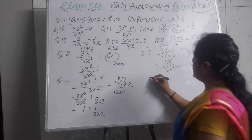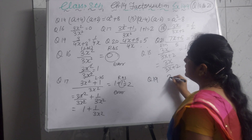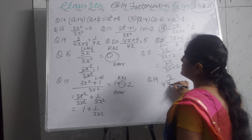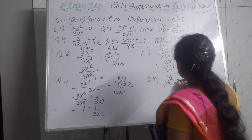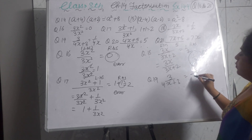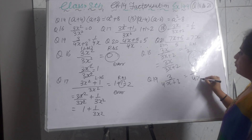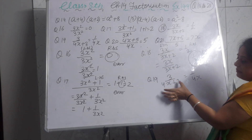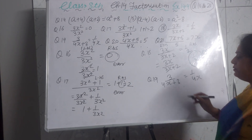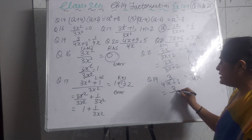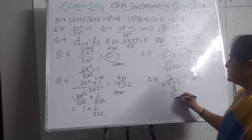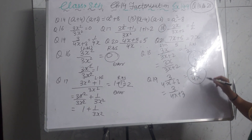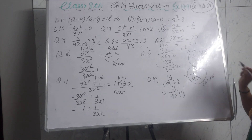Question 19: 3 ÷ (4x + 3) = 1/(4x). This is the same error type as question 18: single term numerator divided by a binomial denominator. You cannot cancel or simplify. The expression must be written as 3/(4x+3) as it is. The given answer 1/(4x) is wrong.